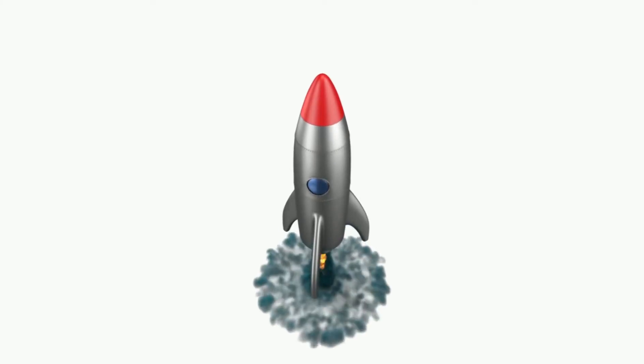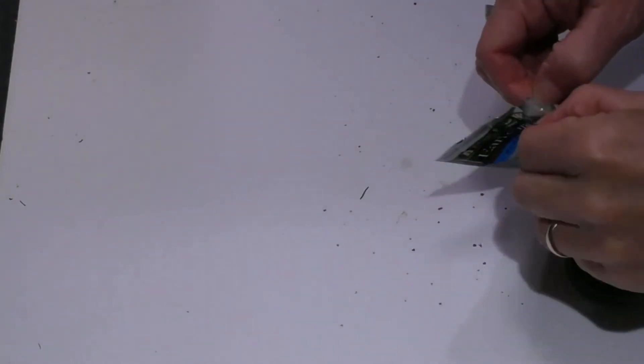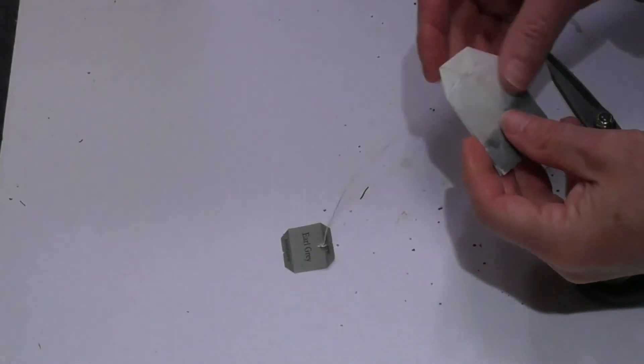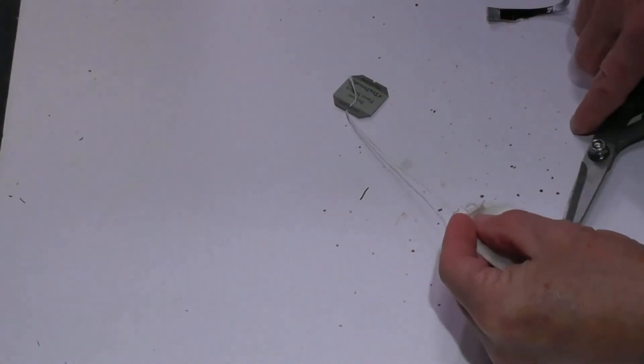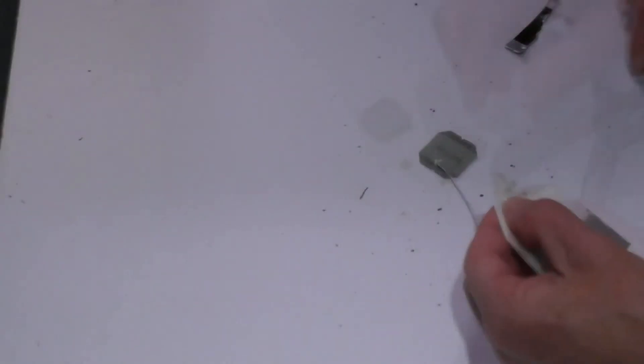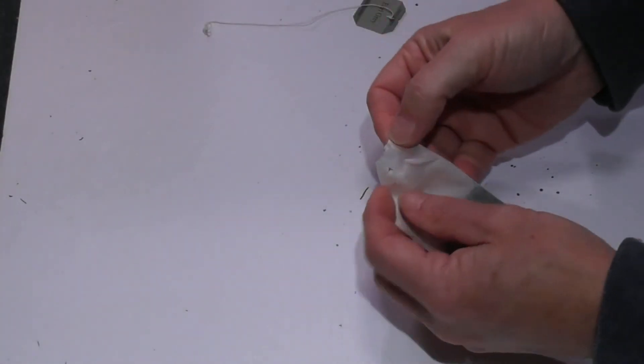I'll show you how I created the tea bag rocket. First, get a tea bag and cut the string out. This allows you to unfold the bag and empty out the tea.